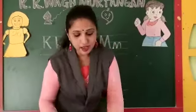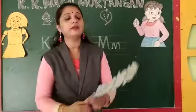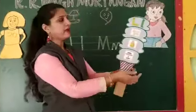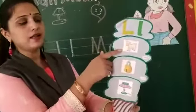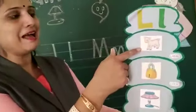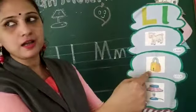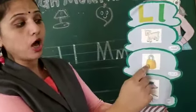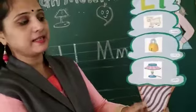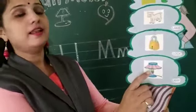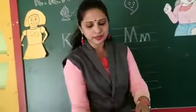L says love, love, love — leaf. L says love, love, land. L says love, love, love — land. L says love, love, love — lock. La, la, la, land. Very good children.